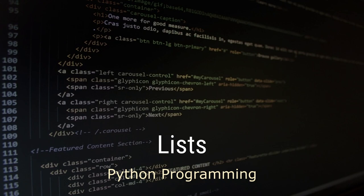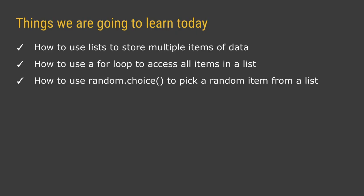Hi and welcome to this last video in our short introduction to Python programming. In this video we are going to be looking at lists, and we use lists to store multiple items of data. We're going to learn about that first, then look at how to use a for loop to access all items in a list, and also how to use a random choice function to pick a random item out of a list. Let's go straight into repl.it and start a new Python REPL.